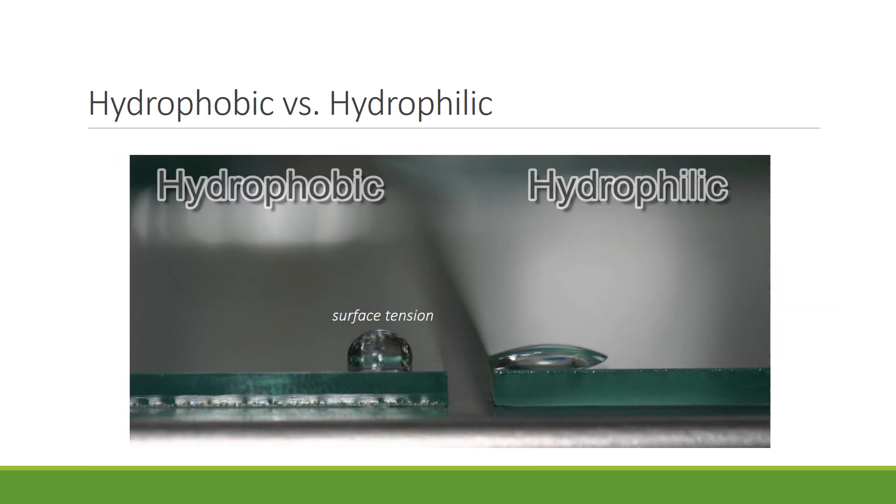This picture shows you the difference between water on a hydrophilic surface and a hydrophobic surface. If the surface is hydrophobic, it fears water, and water tends to bead up. If the surface is hydrophilic, it loves water, and water tends to spread out across a hydrophilic surface.